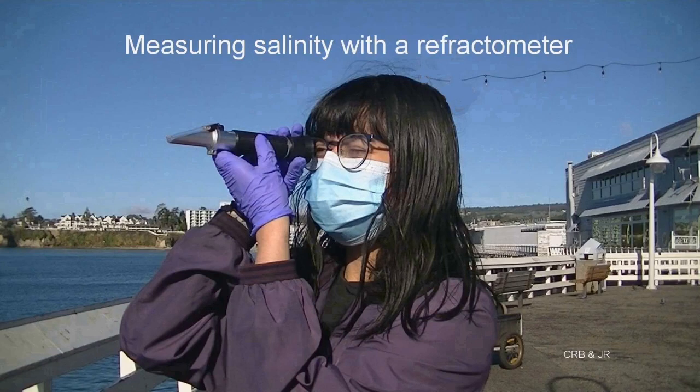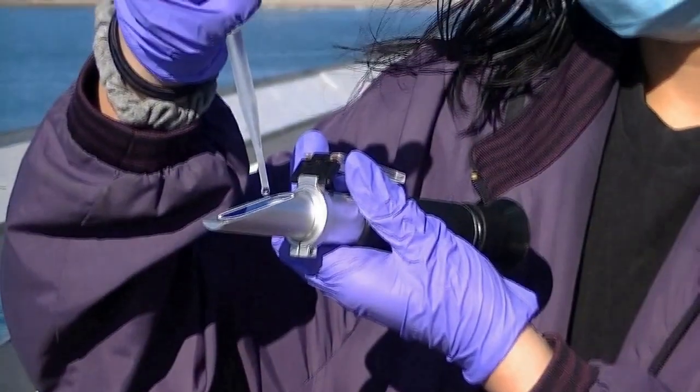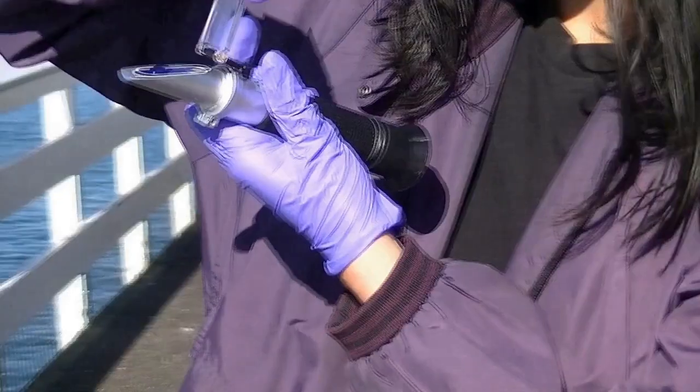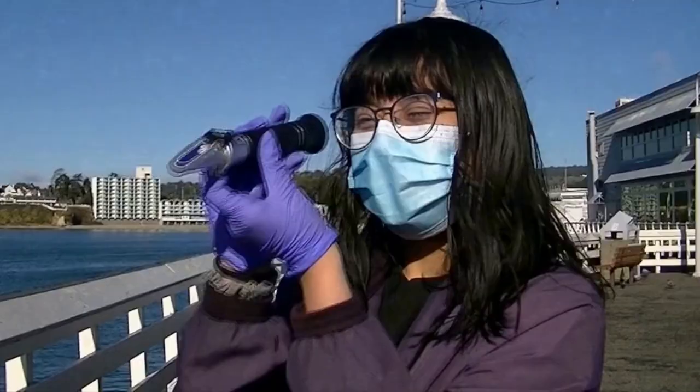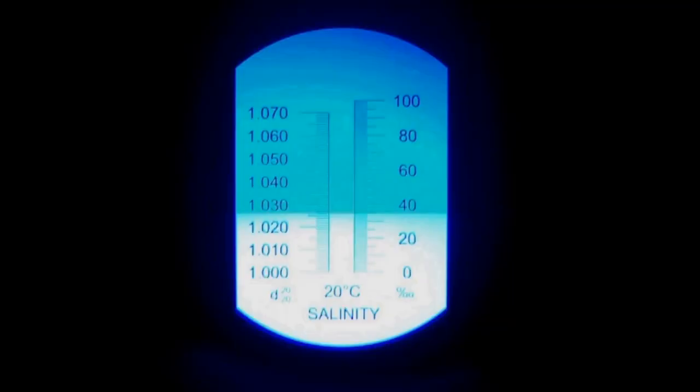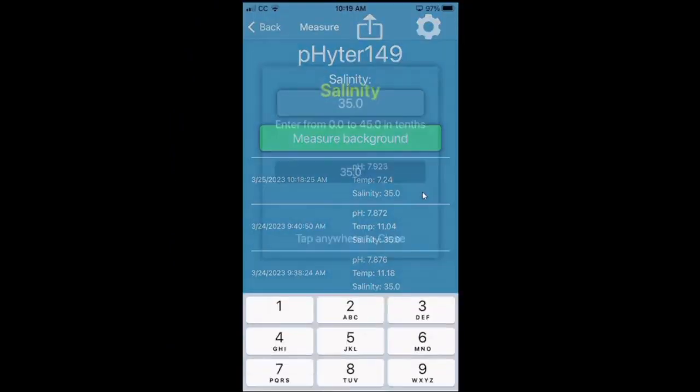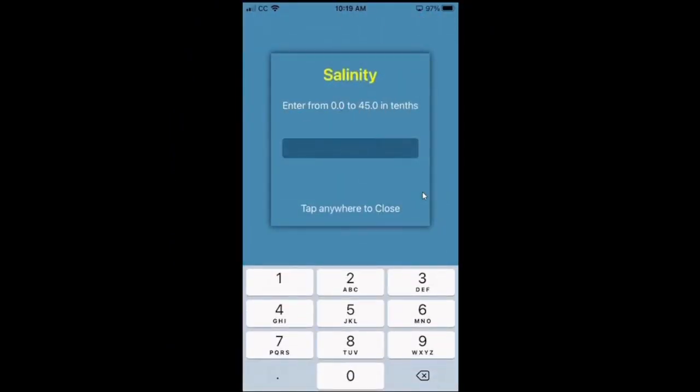Before measuring the pH, we need to check the salinity. Carefully pipette a drop of liquid. If required, you can change the salinity.